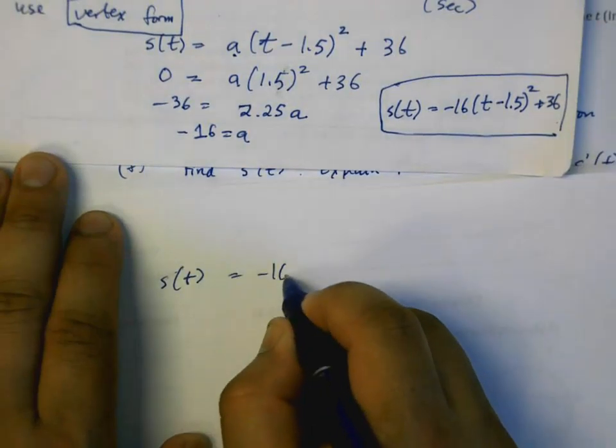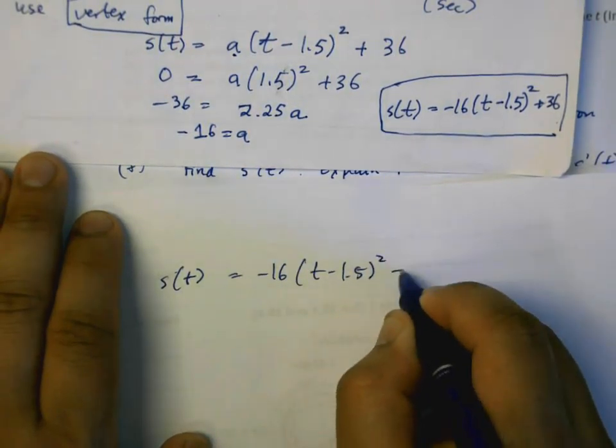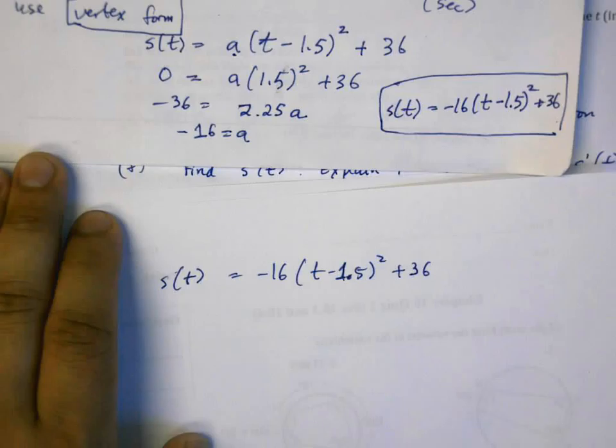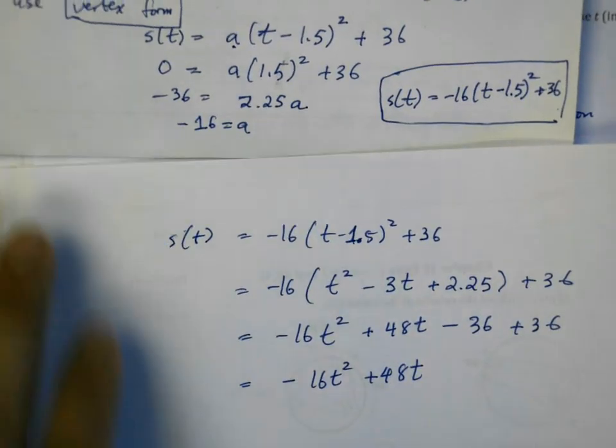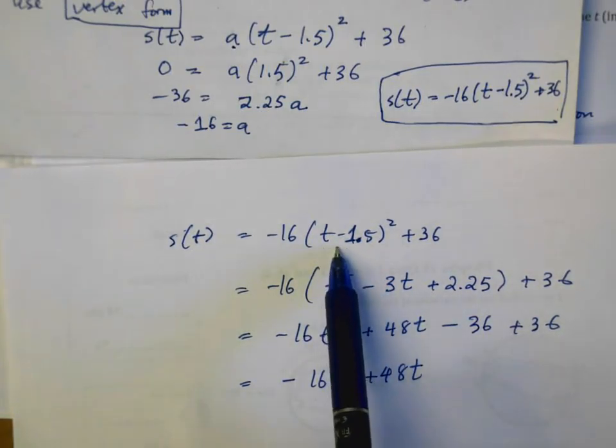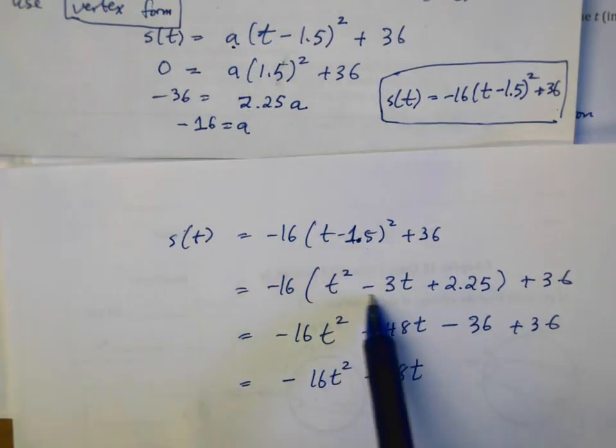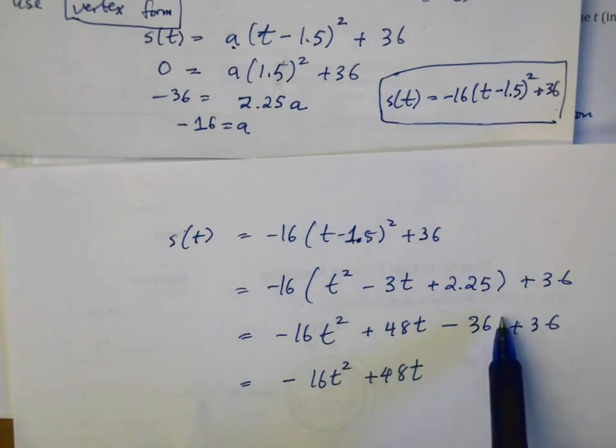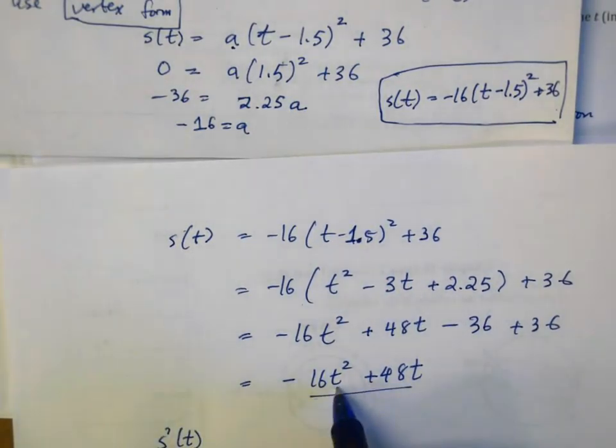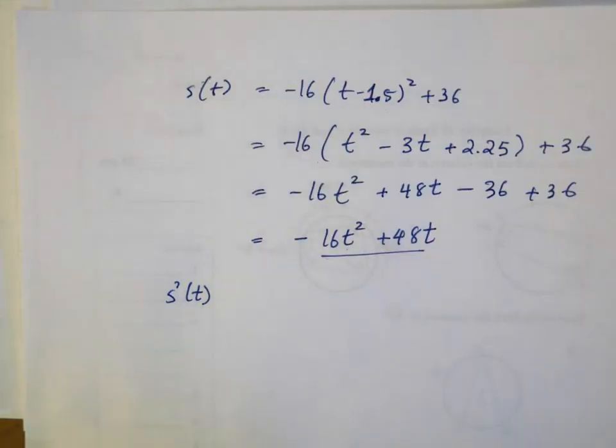Now for the really fun stuff. Part D: sketch the position function s(t). Well let's see, since this rock is being thrown in the air, it has to go up and then it has to come back down. We know for a fact that the maximum height occurs at t equals 1.5 seconds and that height, how far has it traveled between 0 and 1.5, this is in fact another way of saying the max height. So it must reach the maximum point here and then come back down.